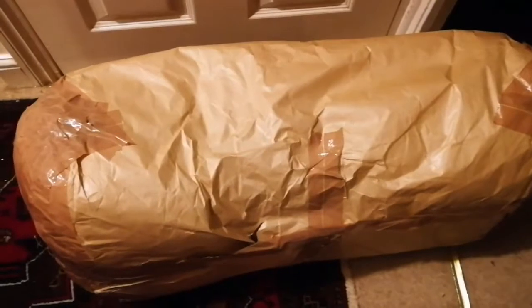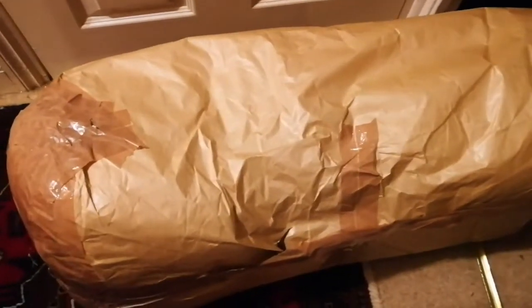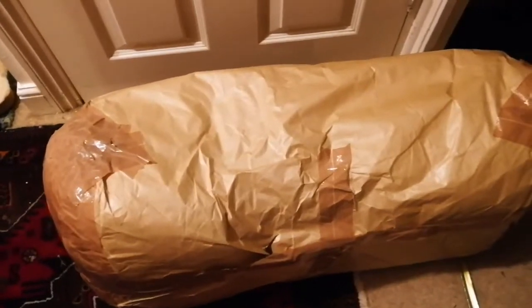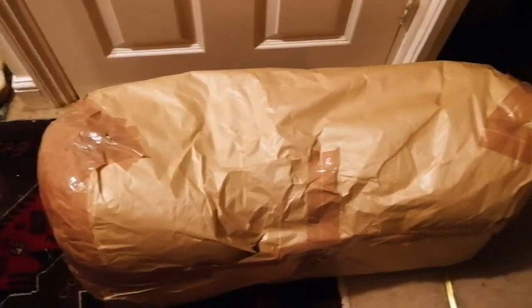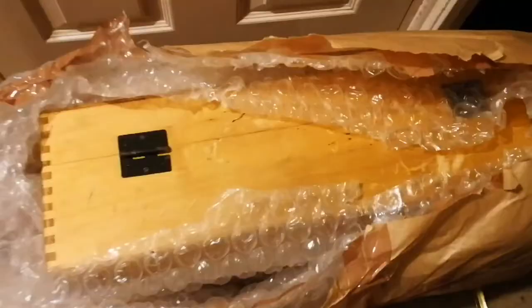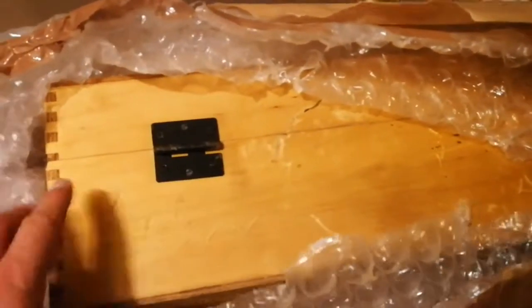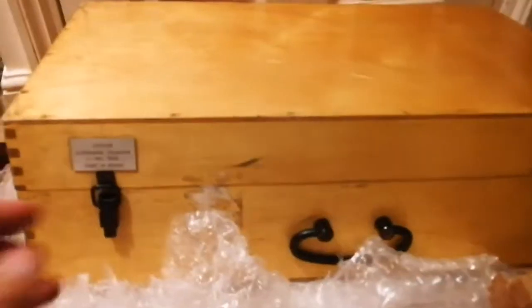This is an unboxing of a TAL telescope, a Russian telescope. This one I think is the 64 millimeter version of it. Let's see what it is. As you can see, this is well packed, but this is the hinge side of it, so I have to turn it over. Now I have removed the packaging.